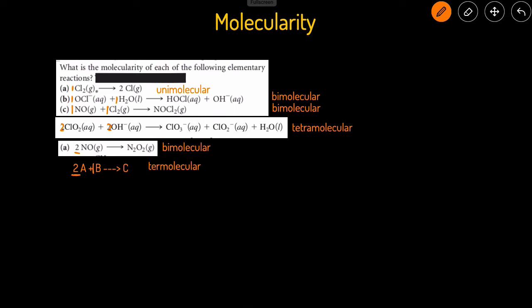So if you have one reactant, it's unimolecular, two reactants is bimolecular, three is termolecular, and four is tetramolecular. You're probably not going to see more than four reactants because it's really rare for four or more reactants to collide at once.